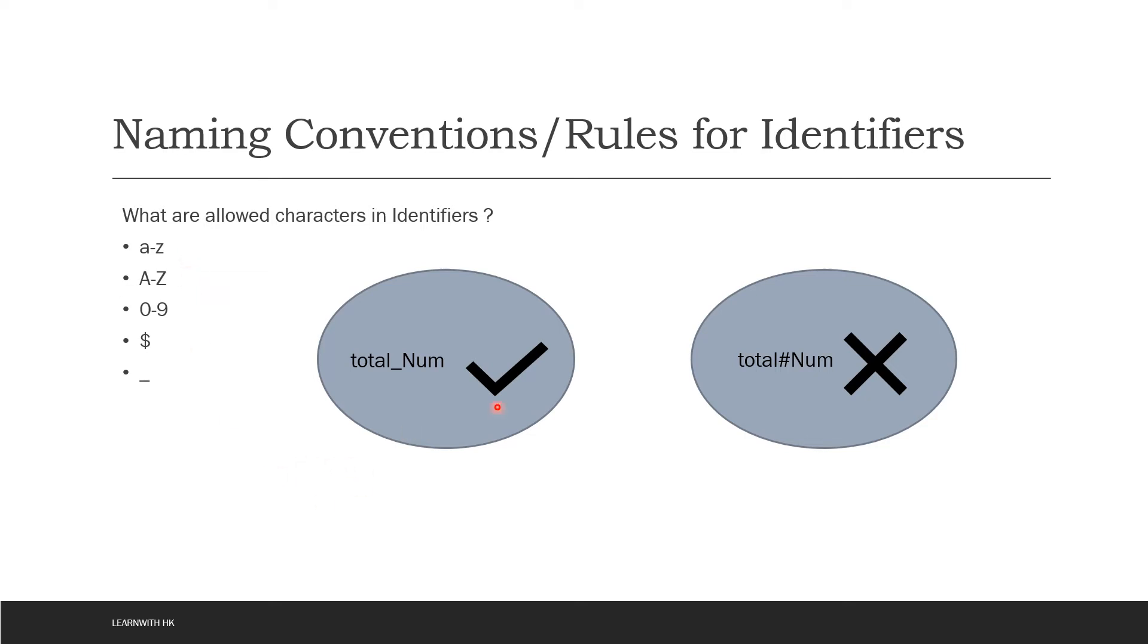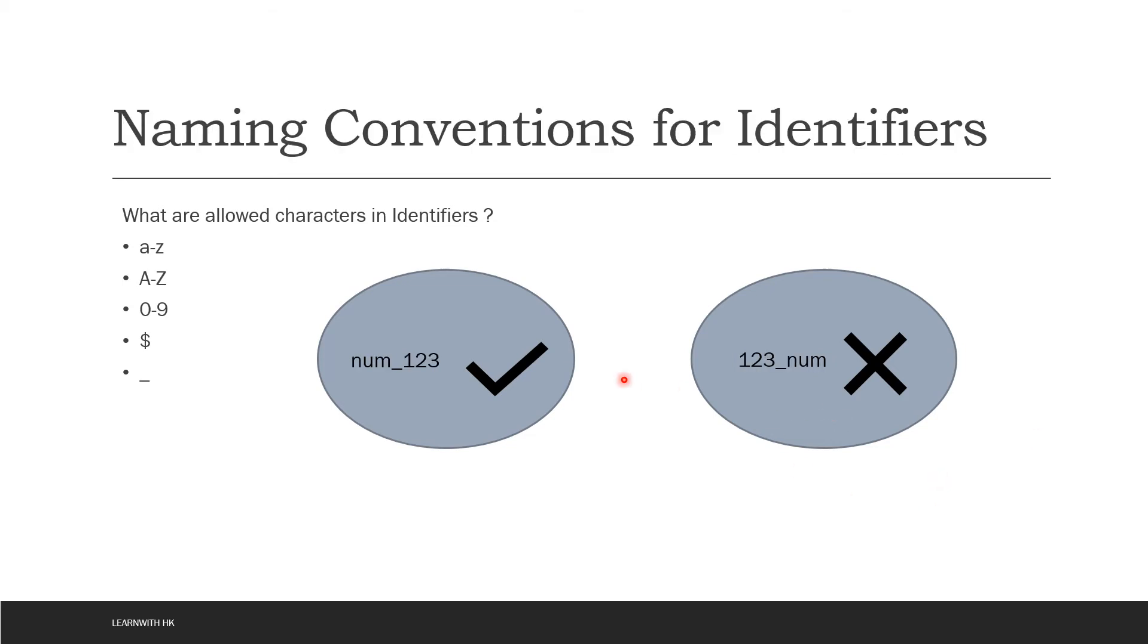For example, if you have created a variable with an identifier name as total_num, it is a valid identifier. But if you are using hash into it, it's an invalid identifier and the code is going to give you a compile time error.